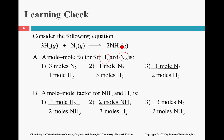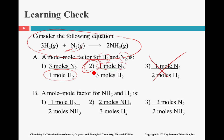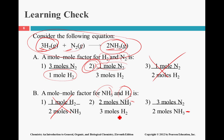Looking at H2 and N2: for every three H2 that are used, there is one mole of N2 that's also used, so we're looking for a three-to-one relationship. For NH3 and H2, we look for a two-to-three relationship. The two needs to be with NH3 and the three needs to be with H2, so that gives us the correct molar ratio.